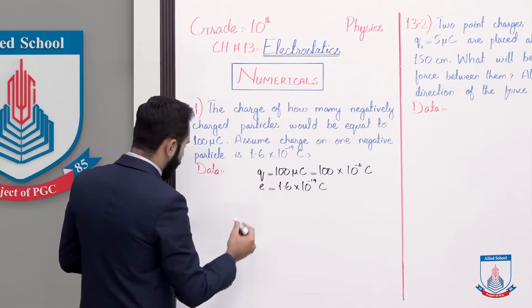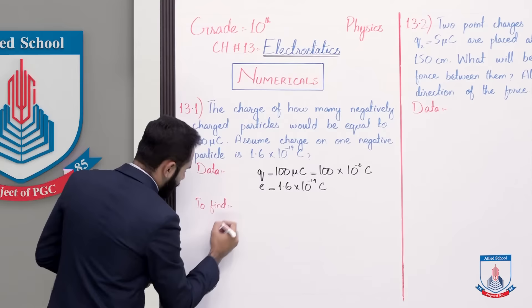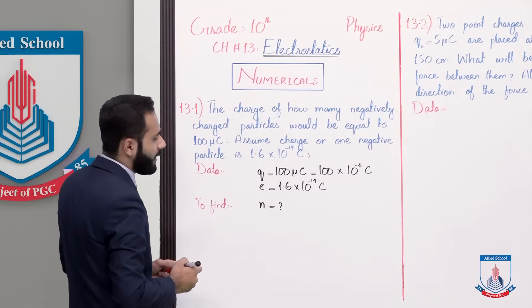So to find: n, the number of negatively charged particles, aapne find out karne hain.